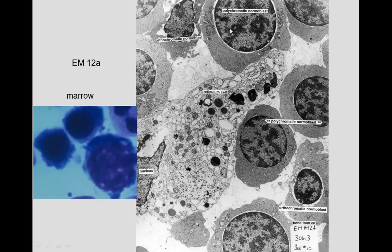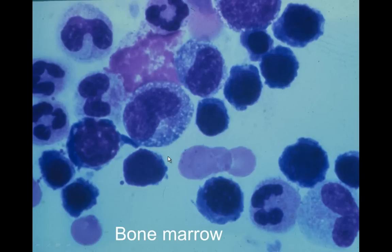We can see polychromatic normoblasts with nuclear pores still attached, but the nucleus is condensing and will ultimately be removed. These cells are polychromatic because they have ribosomes and hemoglobin being added — hemoglobin staining pink and ribosomes staining blue together make them polychromatic. As development proceeds, ribosomes are reduced and you get orthochromatic normoblasts.